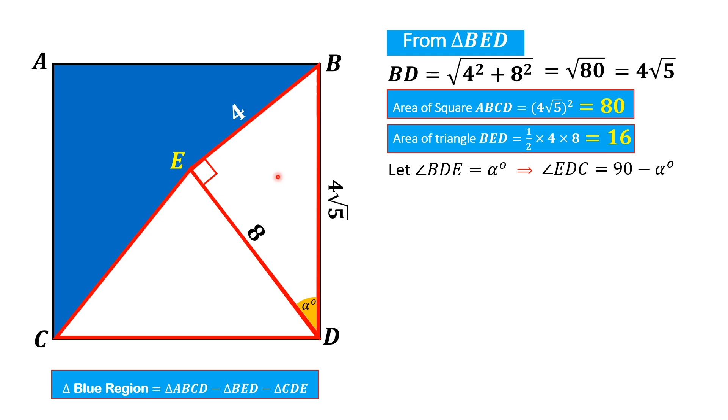From triangle BED we can write cosine alpha equals base divided by hypotenuse, that is 8 over 4 times square root of 5. And from here alpha equals cosine inverse of 2 over square root of 5, which equals 26.57 degrees. So this angle EDC is 90 minus alpha, so angle EDC equals 63.43 degrees.